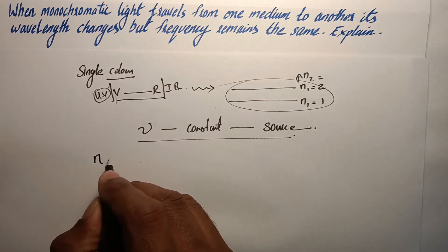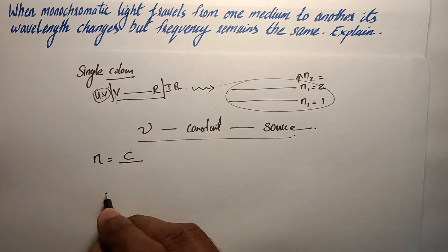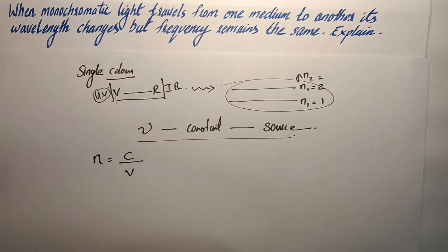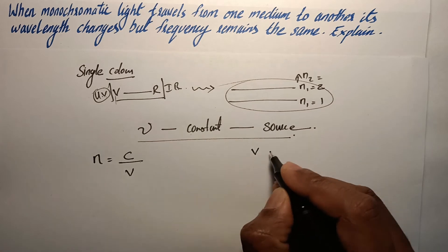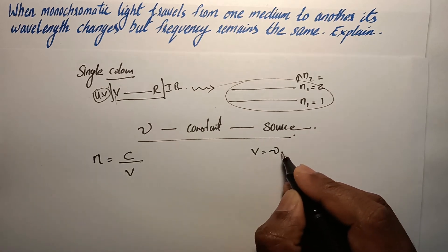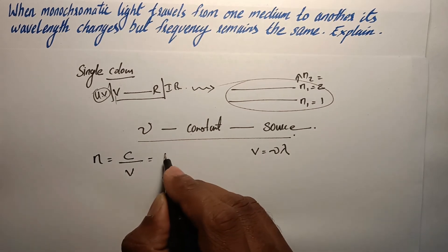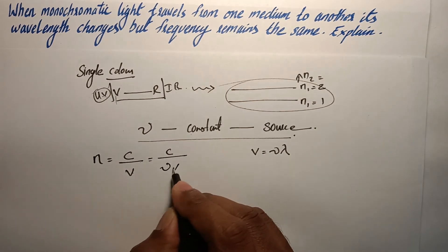The refractive index is also defined as the ratio of velocity of light in vacuum to velocity of light in a medium. And the velocity of light in a medium can be written as the product of frequency and wavelength. So when we substitute this equation, it becomes c by νλ.